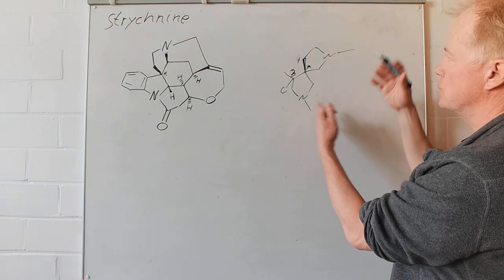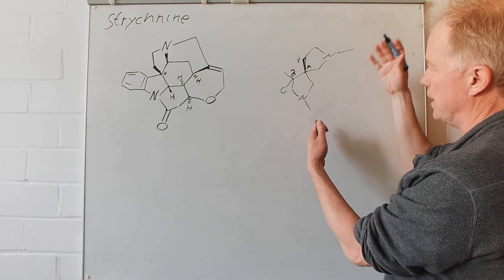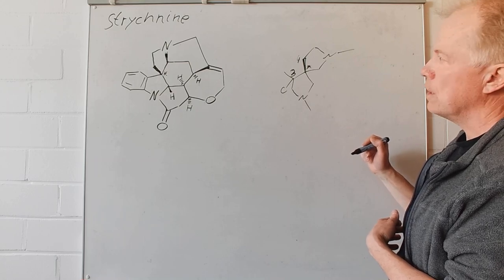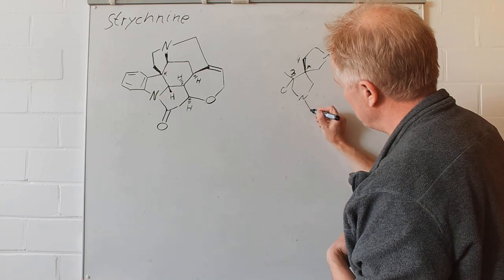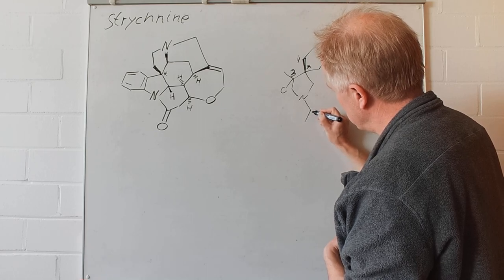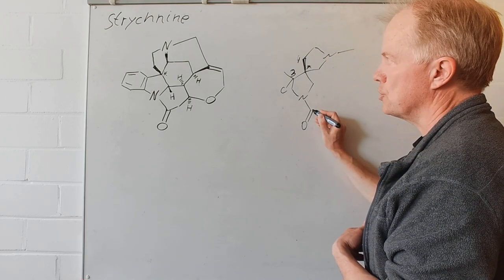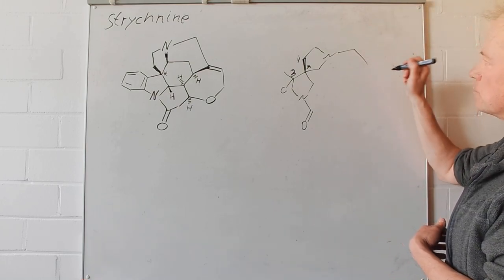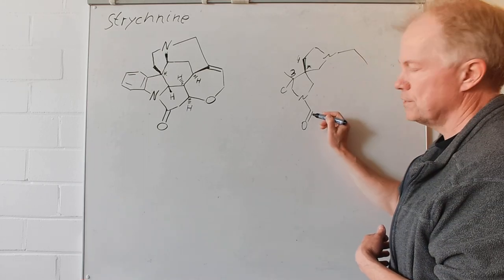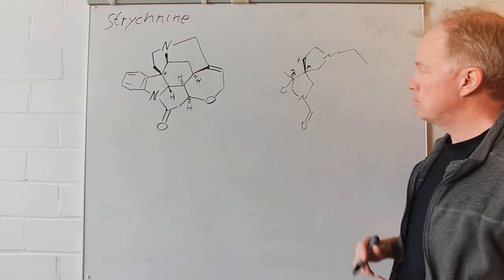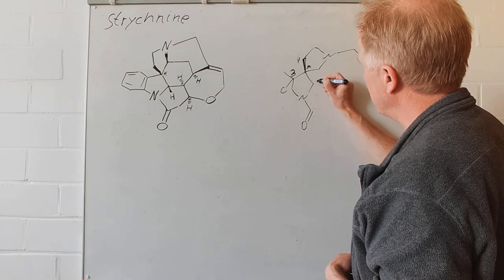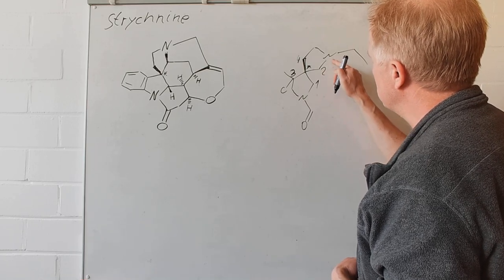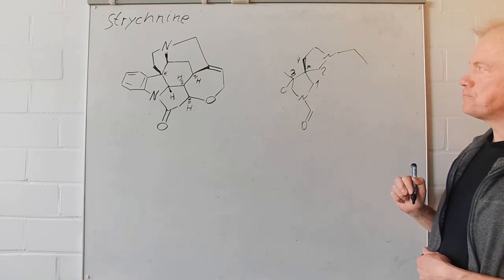Still, we cannot decide which one has the higher priority. However, now as I said it's a carbonyl group. We have an oxygen attached here. Here it is another carbon and of course two hydrogen. This then has of course the higher priority. So, we can assign the highest priority here and the second priority for this chain. So, four different substituents.